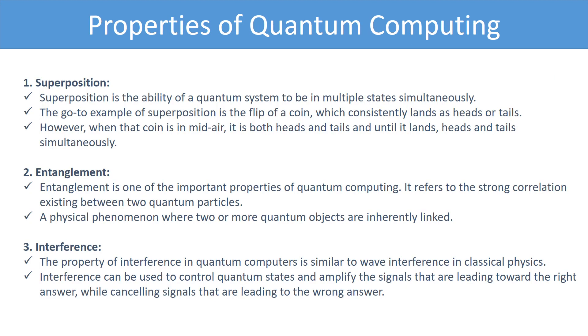Quantum computers use three fundamental properties of quantum mechanics to store, represent, and perform operations on data in such a way so that it can compute exponentially faster than any classical computer. First is superposition. Superposition is the ability of a quantum system to be in multiple states simultaneously. The go-to example of superposition is the flip of a coin, which consistently lands as heads, or tails, a very binary concept. However,